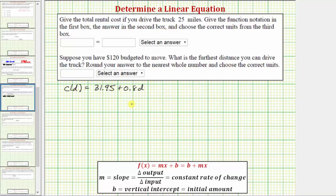So we'd have C(25) equals, we substitute 25 for the input variable D: 31.95 + 0.8 × 25. 31.95 + 0.8 × 25 equals 20. Therefore C(25) = 51.95, and the units would be dollars.